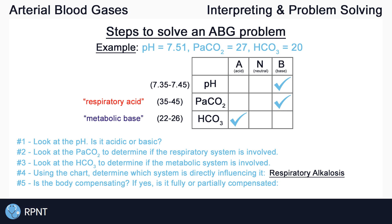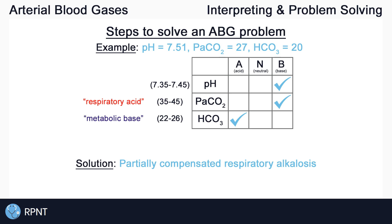Lastly, we want to determine whether the body is compensating for the respiratory alkalosis or not. The pH is abnormal, so we know right away that the body is not fully compensated. We still want to know whether the body is partially compensated or not compensating at all. Looking at our PaCO2 and HCO3, we can see that they are both opposite and abnormal in the chart, meaning one is trying to compensate for the other. The body is trying to fix the problem but is currently unsuccessful because the pH remains abnormal. So the body is partially compensating, and the final answer is: partially compensated respiratory alkalosis.